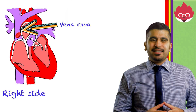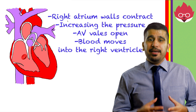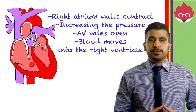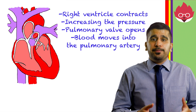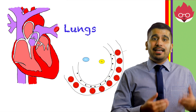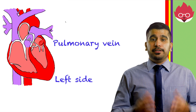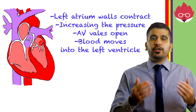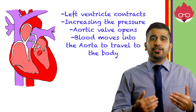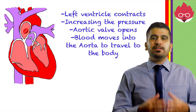First, blood will enter the right side of the heart via a vein called the vena cava. Contraction of the walls of the atrium increases the pressure in the chamber, moving blood into the right ventricle. The right ventricle contracts, increasing the pressure forcing blood into the pulmonary artery, where blood makes its way to the lungs to pick up oxygen in gas exchange for carbon dioxide. From the lungs, blood enters the left side of the heart via the pulmonary vein. As the left atria contracts, it increases pressure and blood moves into the left ventricle, whose contractions then cause blood to move into the aorta to travel to the entire body.